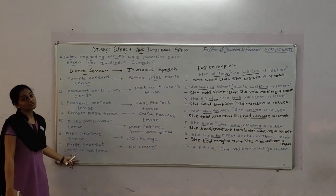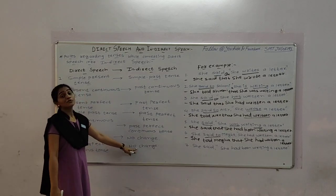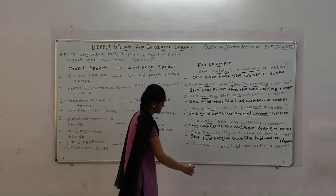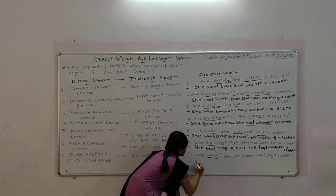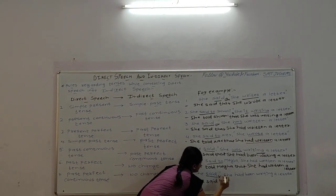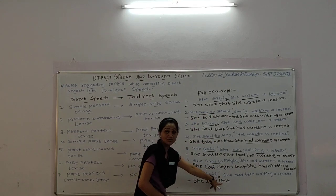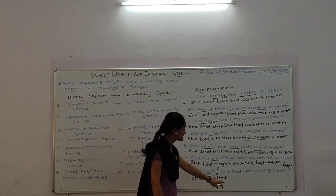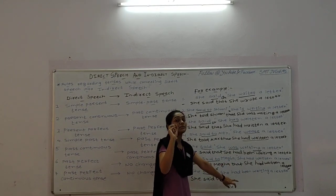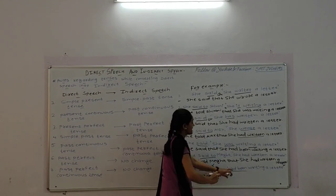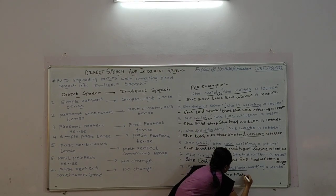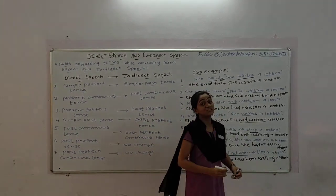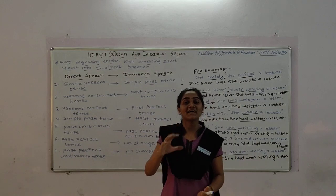The last tense is past perfect continuous tense. Same as past perfect tense, there would also be no change in the tenses while converting direct into indirect speech. She said that — we use 'that' again in each example. There would be no change in the tense; there would only be changes in pronouns and adverbs. So we write it the same as in the question: she had been writing a letter. This was all about changes in tenses while converting direct into indirect speech. Thank you.